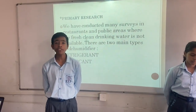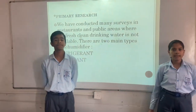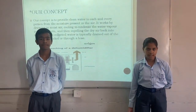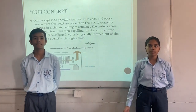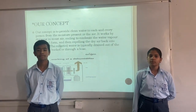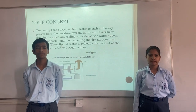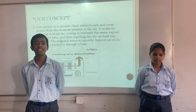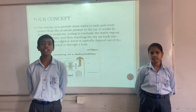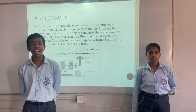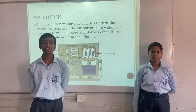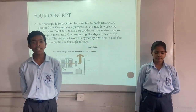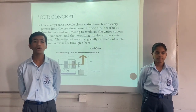There are two main types of D325: refrigerant and desiccant. Our concept is to provide fresh water to each and every person from the moisture present in the air. It works by drawing moist air and pulling the water vapors into liquid form. The dry air is transferred into the room and the water is stored in a bucket through the hoops.